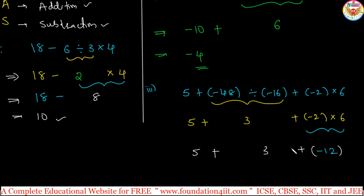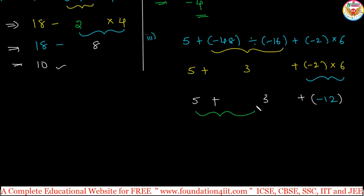Next multiplication, addition. Division multiplication is over, next addition. Addition is 5 plus 3. 5 plus 3 is this part, that is 8 plus minus 12. 8 plus into minus is minus. 8 minus 12 is minus 4. So this is the order.